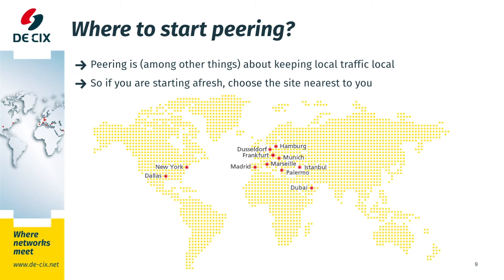Where should you peer? Peering is usually local. If you look at the costs of peering, usually the circuit costs are much higher than the exchange costs themselves. If you're already present at one of our locations — and we have plenty — you should start at the nearest one. It keeps local traffic local and reduces circuit costs. We have presences all over the world. Just look at the map here, or check our locations at our website.